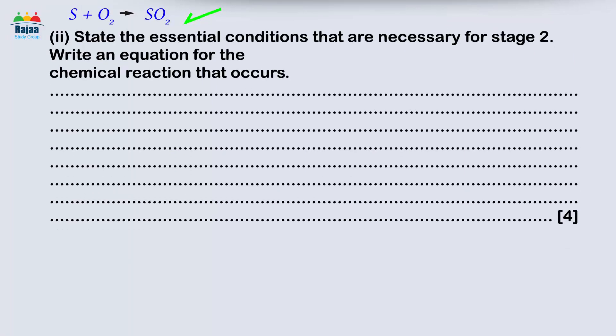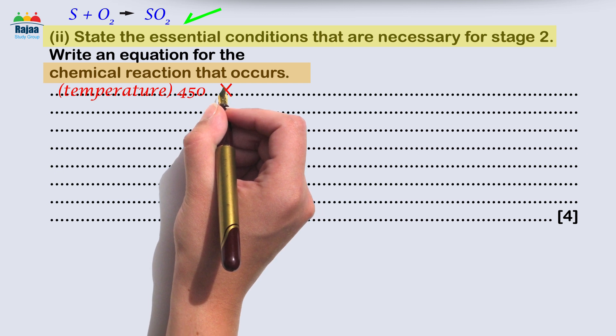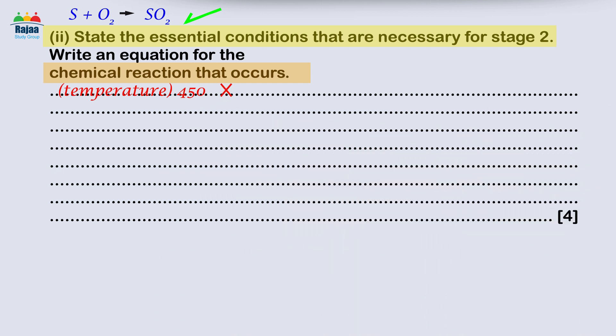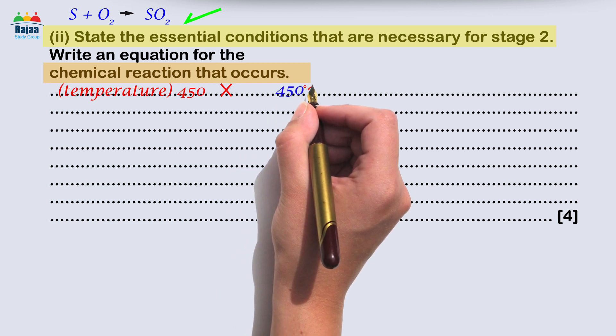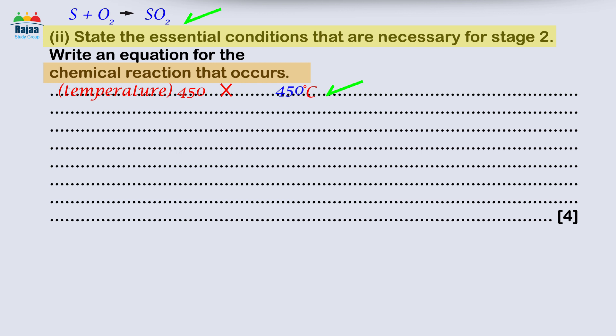Two: If you were taking this exam, how would you state the essential conditions for stage two? Moreover, how would you write an equation for the resulting chemical reaction? Temperature 450 - no, this was occasionally incorrect when quoting temperature. The units must be in degrees Celsius (°C).